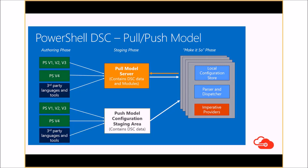We have two modes: a pull mode and a push mode. The easiest one is the push model. Basically, you define or create your configuration, then run and compile it — it creates the MOF file — and then you push it to one of your servers. It's the Local Configuration Manager that will translate those calls and start building up your server with the desired configuration.